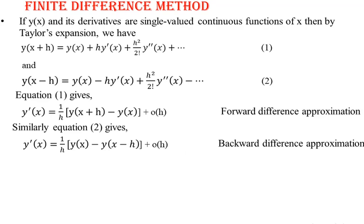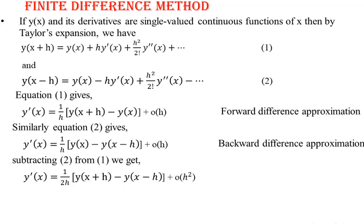We can write a third expression for y'(x) by subtracting equation 2 from equation 1. This gives y'(x) = (1/2h)[y(x+h) − y(x−h)] plus higher-order terms, called the central difference approximation, as it is the difference between the next value and the previous value. This central difference approximation is generally used because it gives better accuracy.